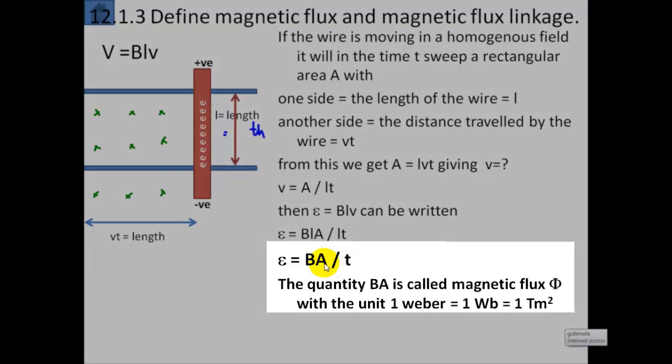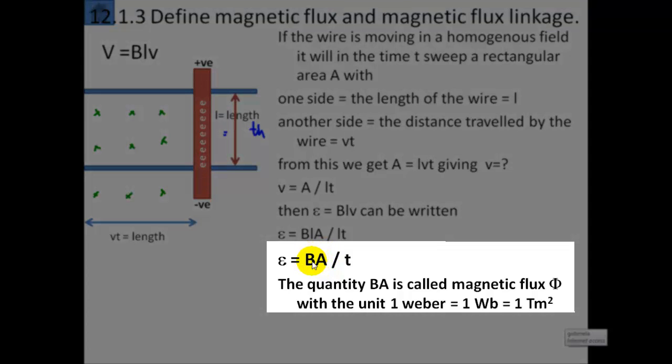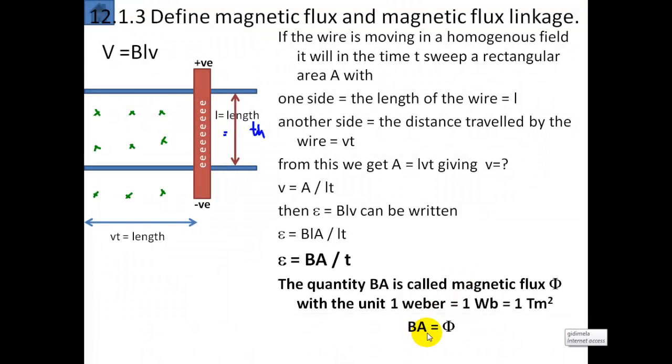This quantity BA, which is the magnetic field strength, also called the flux density, times the area, is called the magnetic flux and is given the Greek letter phi. So BA, the flux density times the area, gives the flux. The unit of flux is webers or Tesla meter squared. BA, which is this flux, is the flux density times A.